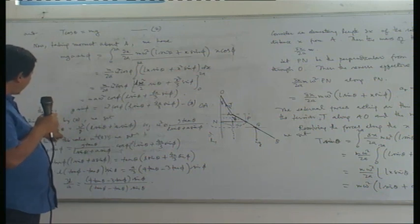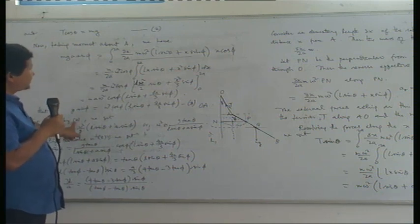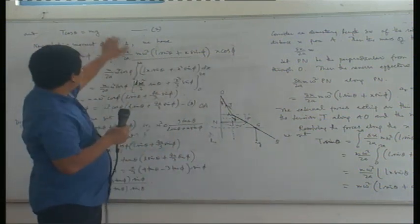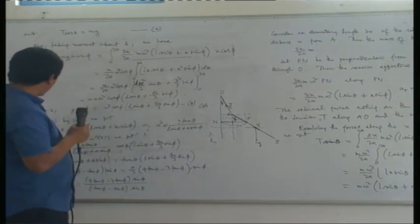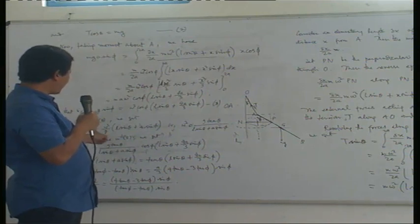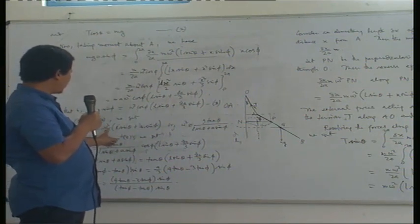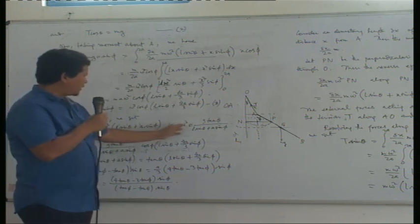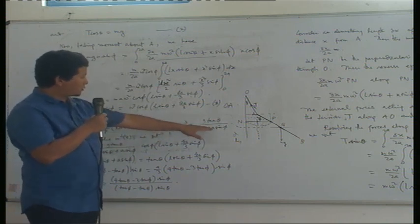If we divide equation 1 by equation 2, we get tan theta equals omega squared divided by G, times L sin theta plus A sin phi. We can rearrange this to solve for omega squared.